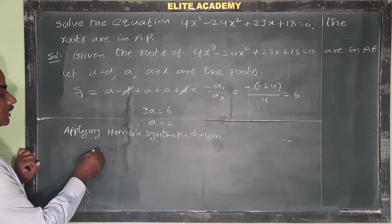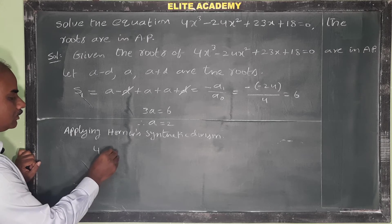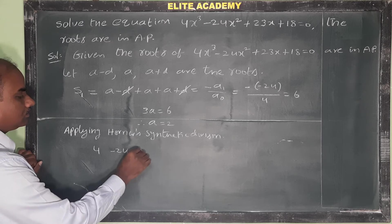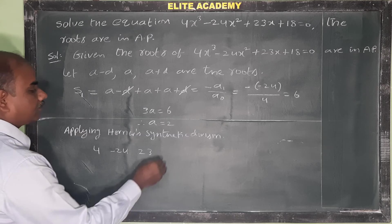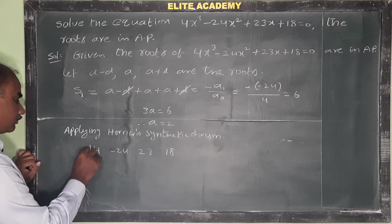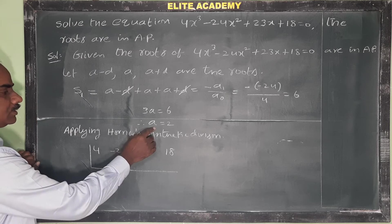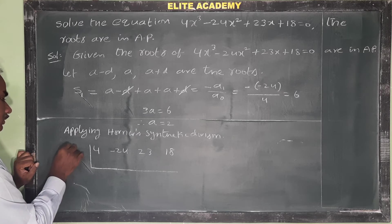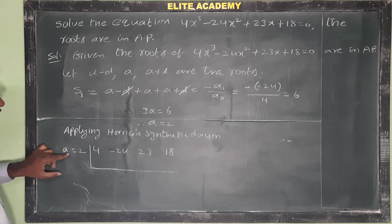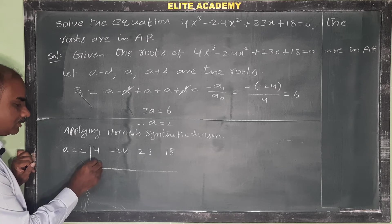Applying Horner's synthetic division: write the coefficients of the equation as 4, minus 24, 23, 18. Since x equals 2 is the known root, we use 2 in the synthetic division. The first entry is 4, and we bring it down: 4 plus 0 gives 4.